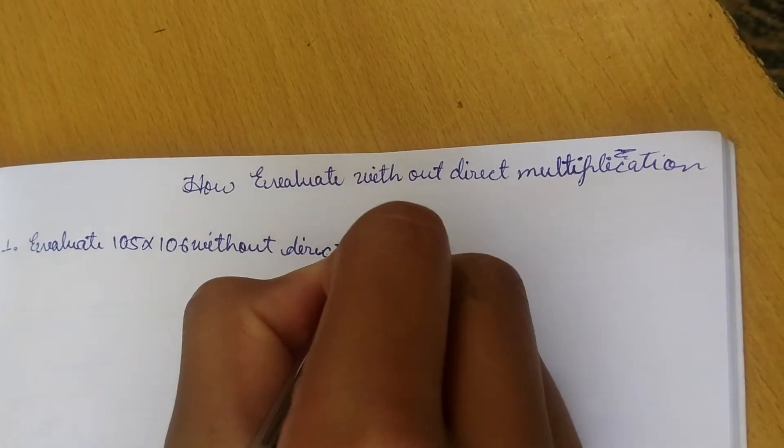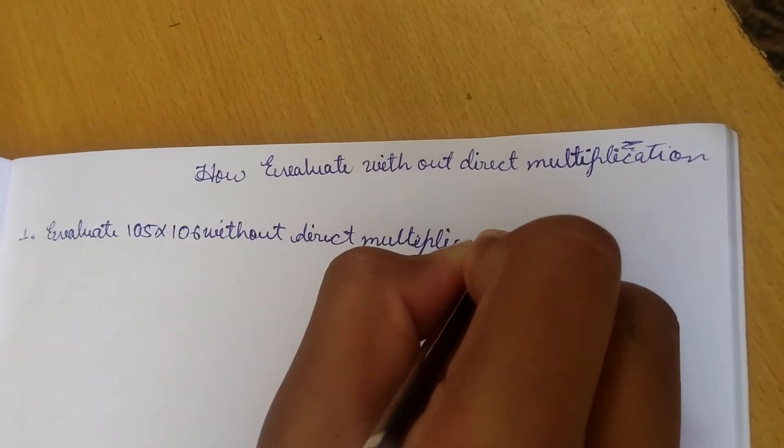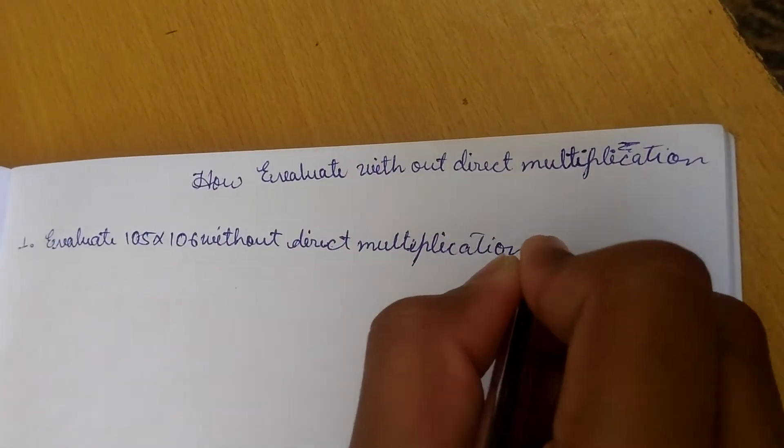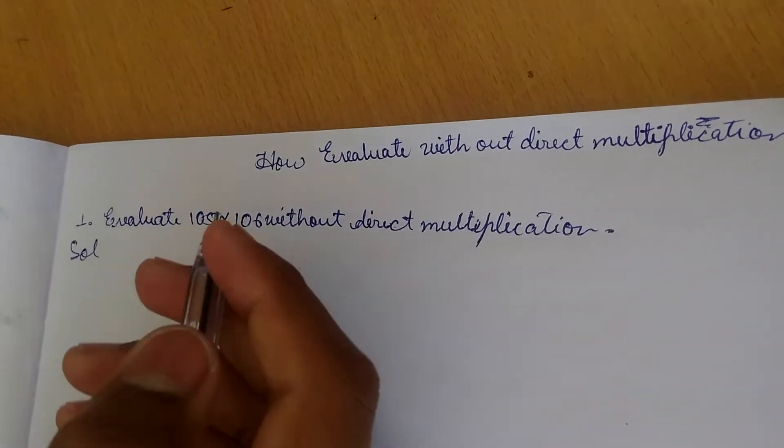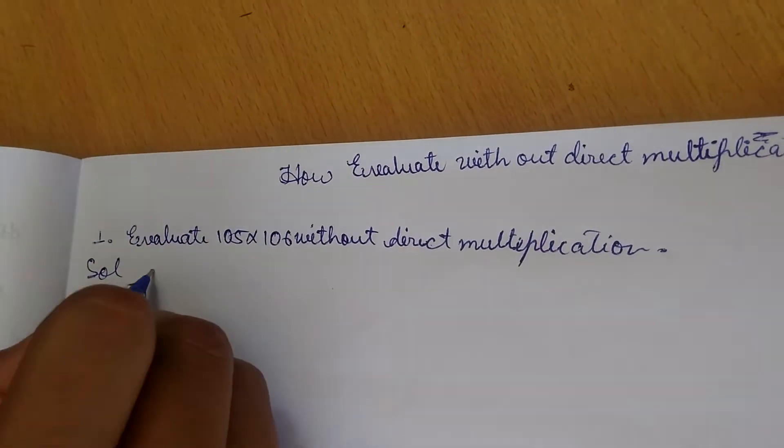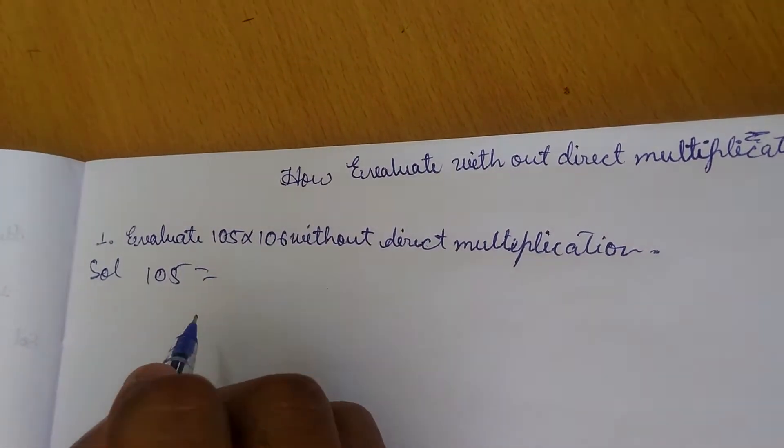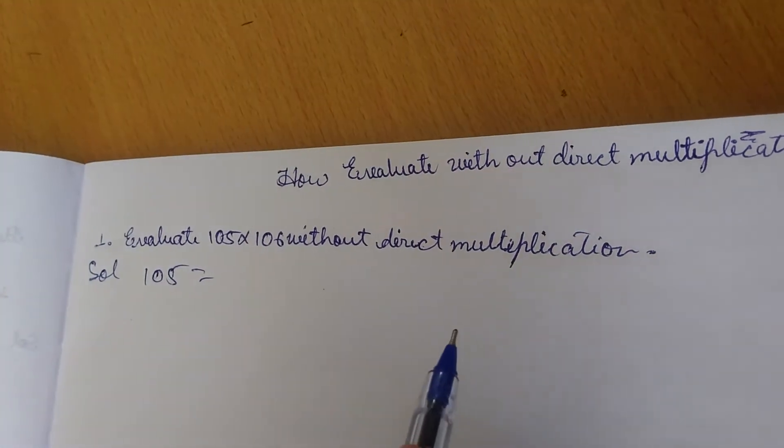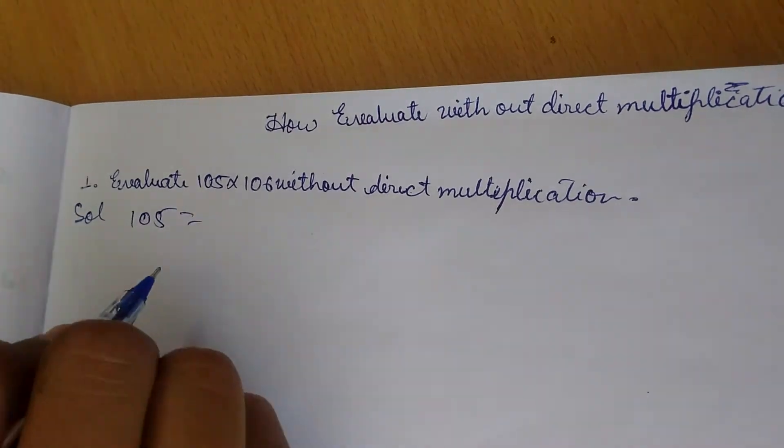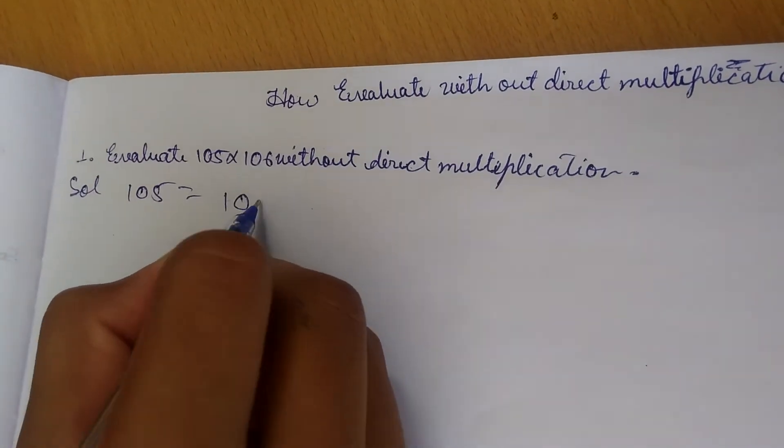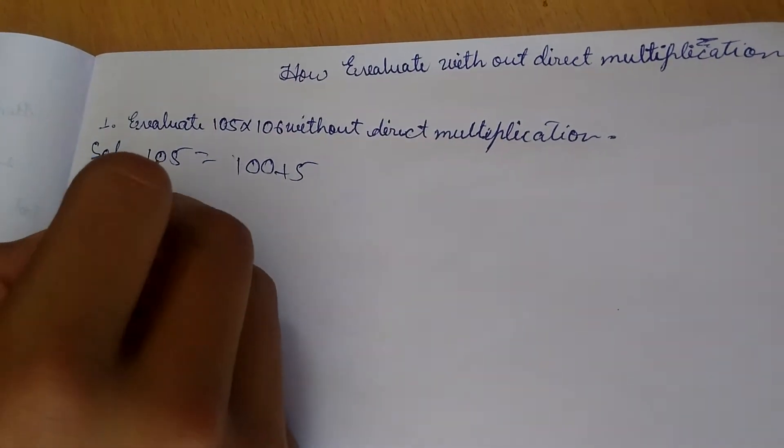The solution of this question is: 105 is equal to - we will take a number which we will subtract or add such that this answer will come the same. I am taking 100 plus 5 because this is very easy to solve using this, and 106 equals 100 plus 6.